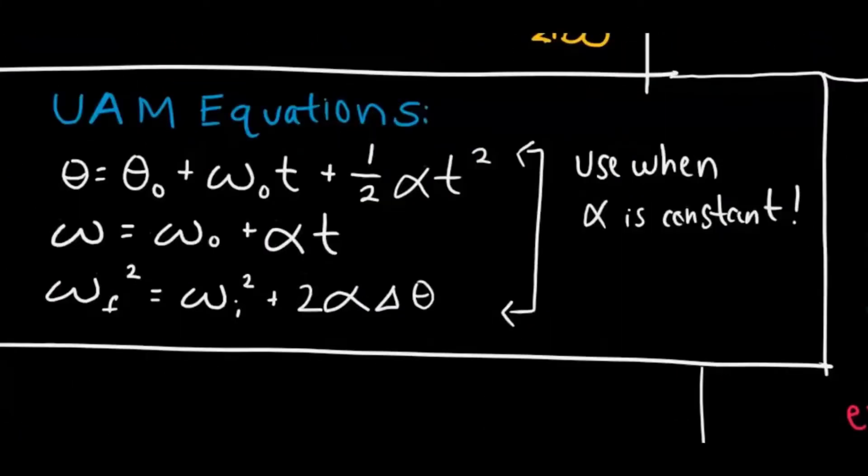And here are the uniformly accelerated motion equations that you'll be using. So this is pretty much identical to the linear equations that you use for kinematics. You want to use these when angular acceleration is constant, and you can see all the variables are pretty much just swapped with their linear counterpart.